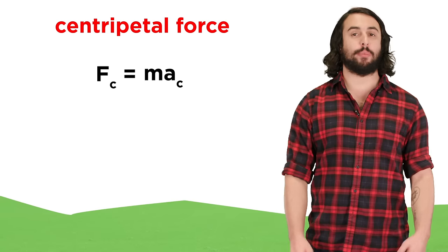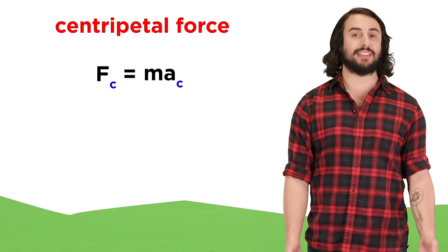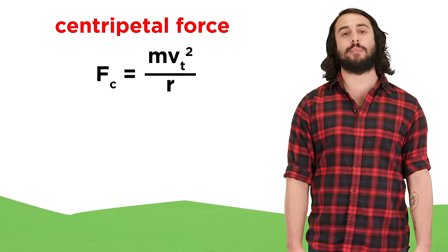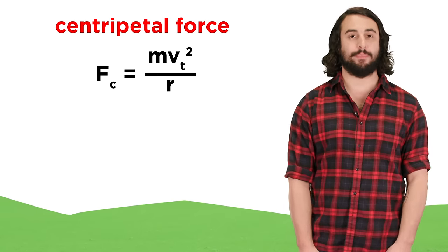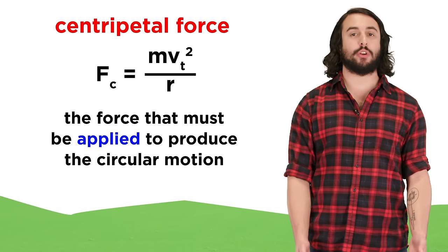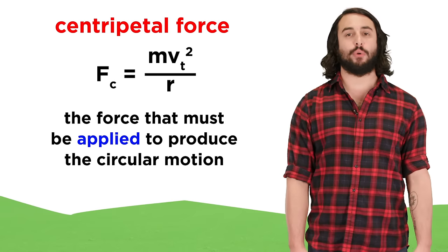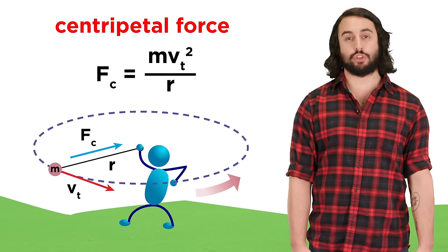So we can describe centripetal force by simply adding the subscript C on force and acceleration, or it can be given by M times tangential speed squared over the radius of the path. This represents the force that must be applied to produce the circular motion, like the amount of force that must be applied to spin a ball on a string in a circle around your head.